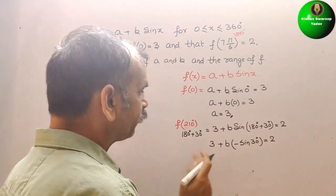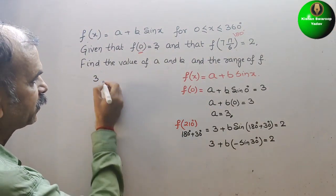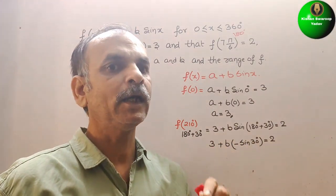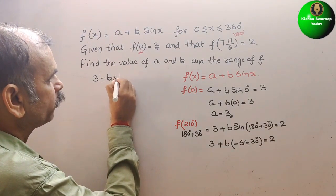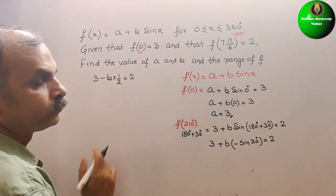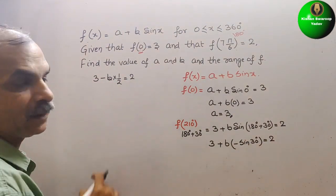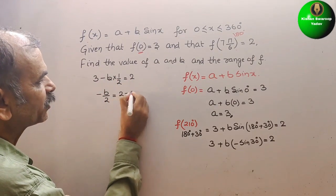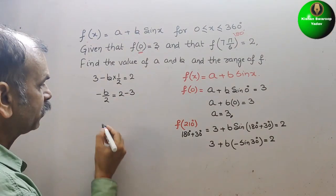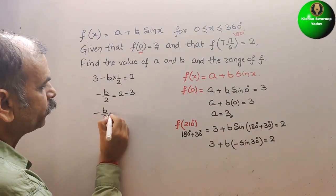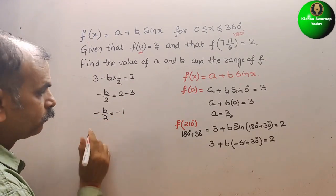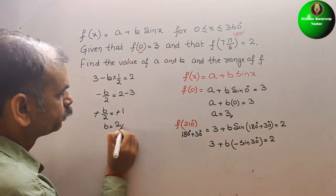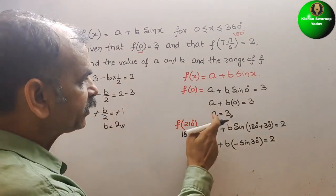Now solving: 3 plus b times minus sin(30°) equals 2. Sin(30°) is 1/2, so we get 3 minus b/2 equals 2. Bringing 3 to the other side: minus b/2 equals 2 minus 3, which is minus 1. So minus b/2 equals minus 1. The negatives cancel, and by cross multiplication we get b equals 2. So a is 3 and b is 2.